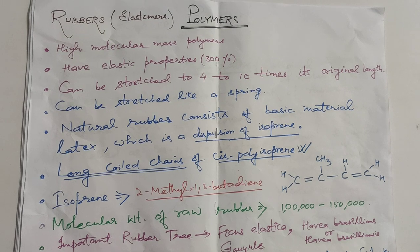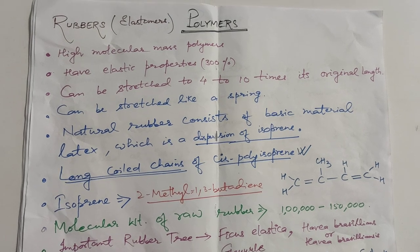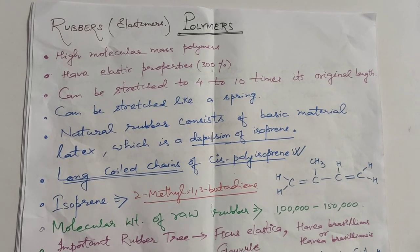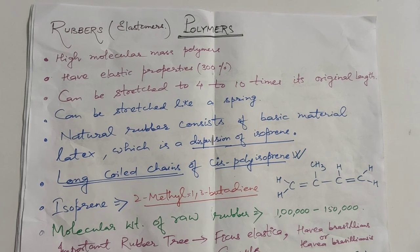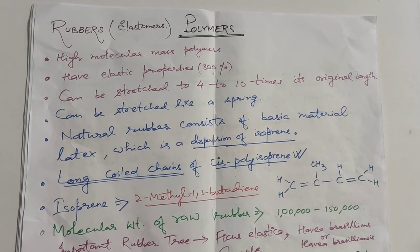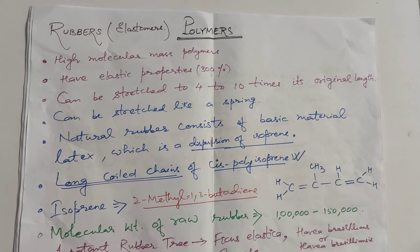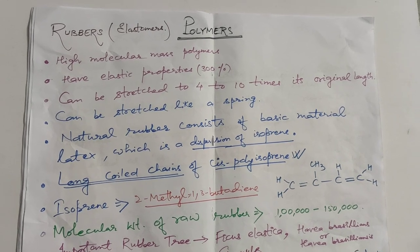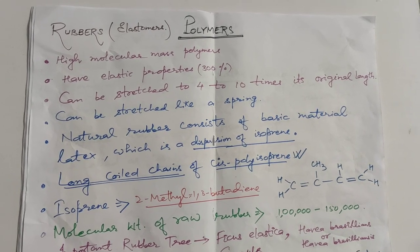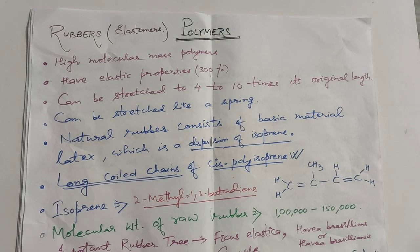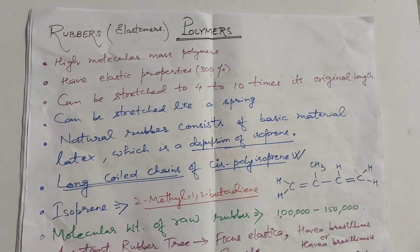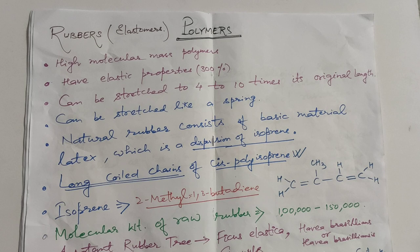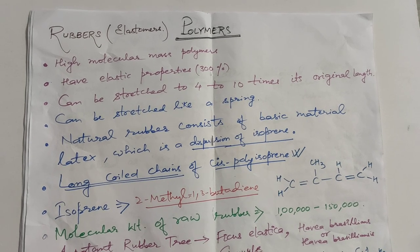Today I am going to discuss rubbers. Rubber is an elastomer. It has high molecular mass and its elastic properties are very high, approximately 300%. It can be stretched to 4 to 10 times its original length and it can be stretched like a spring.